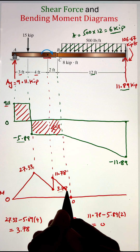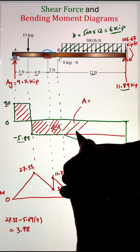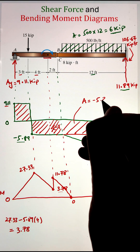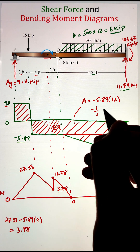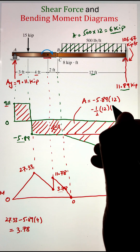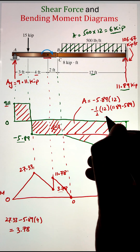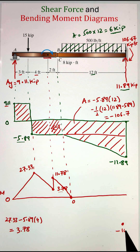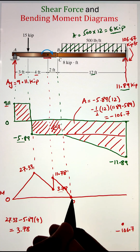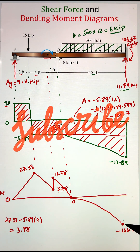From point C to D, we find the area under the shear force curve by dividing it into one rectangle and one triangle. The total area of these two regions is approximately negative 106.7, meaning the bending moment goes from zero at point C to negative 106.7 at point D. Since the shear force diagram has a linear profile in this zone, the bending moment diagram has a quadratic profile. Finally, the couple moment of 106.67 kilopound-feet at D causes a jump up from negative 106.7 back to zero.